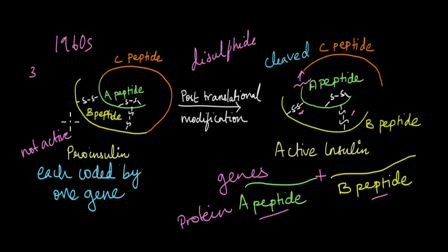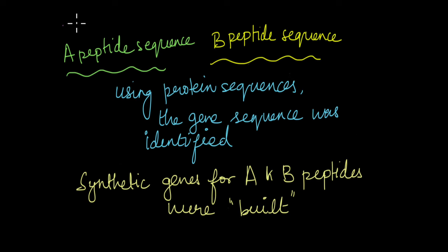So what could they do? Now they had to figure out a way to work backwards. So they did something incredibly amazing in my opinion. Actually, they took the protein sequences for the A peptide and the B peptide. Using the protein sequences, they literally built the gene. They identified the gene sequence and they built the A and the B genes by adding each nucleotide one at a time based on the protein sequences for these genes. Synthetic genes for A and B peptides were built.